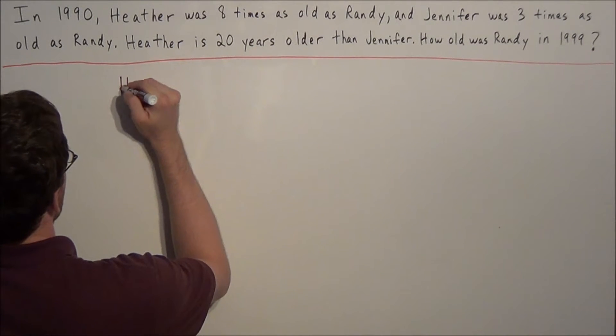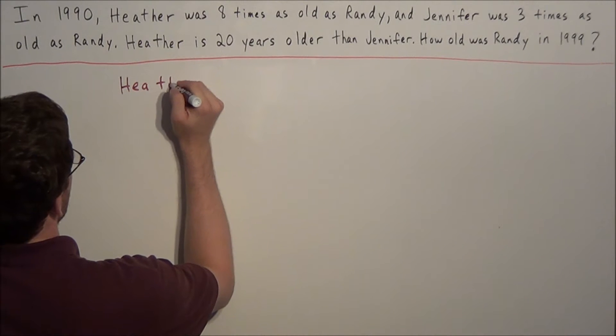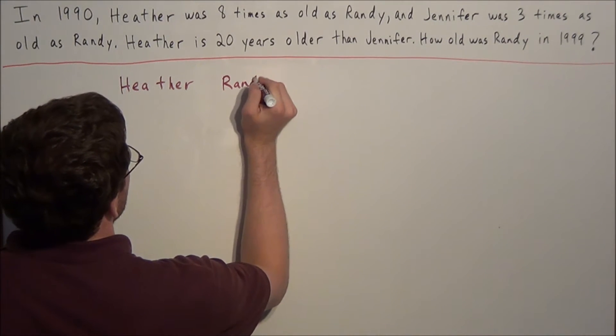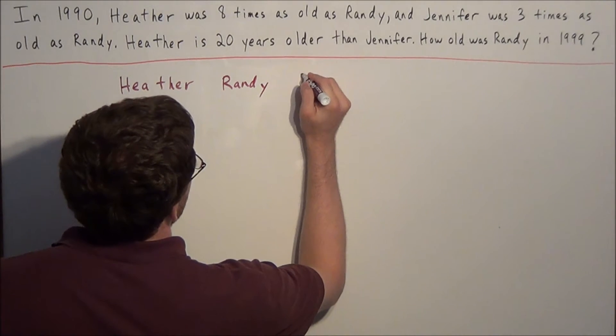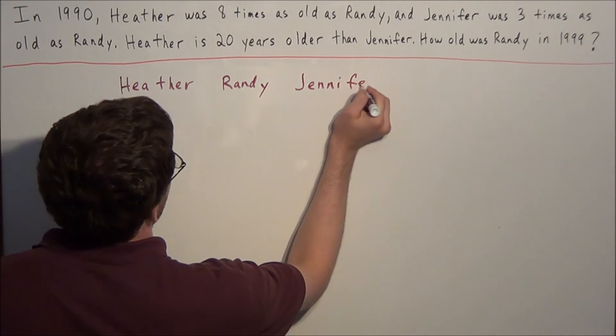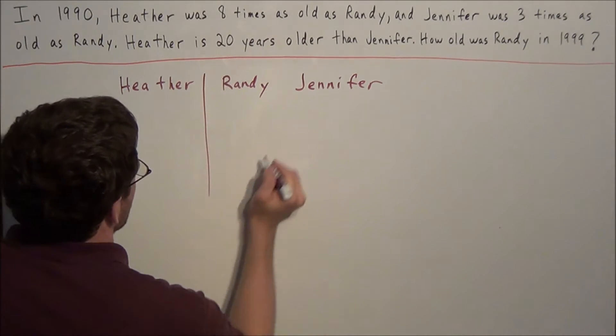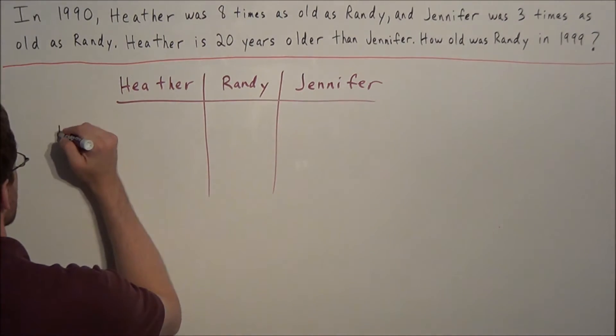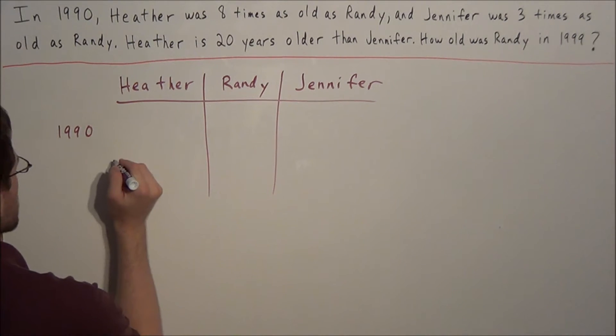We have Heather, Randy, and Jennifer. And the first year mentioned in this problem is 1990, so we'll make a row and label it 1990.